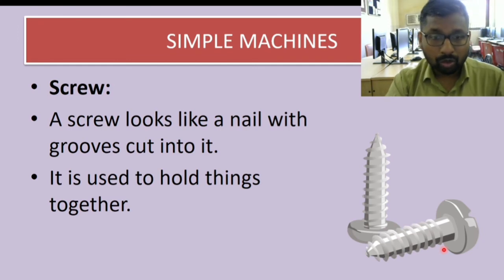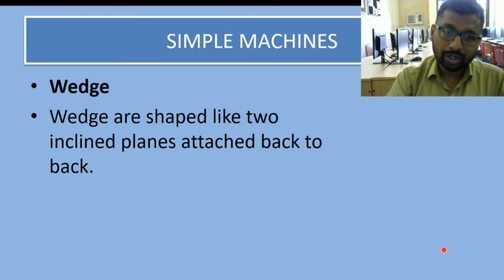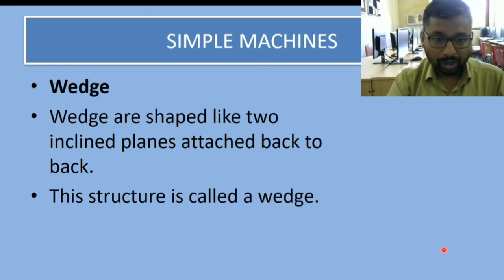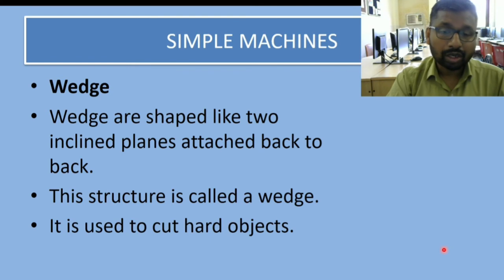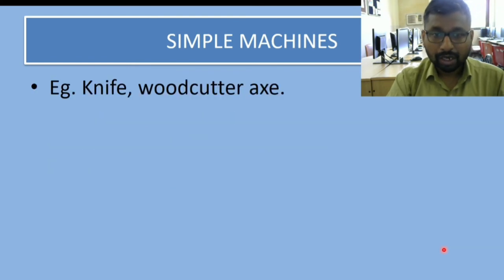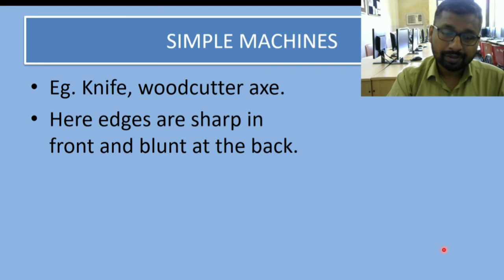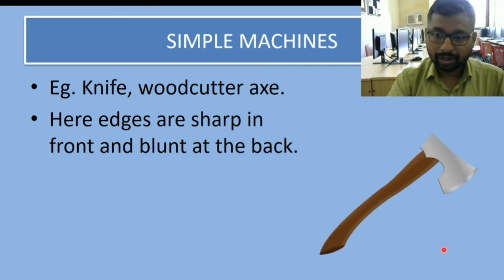Then comes a wedge. Wedges are shaped like two inclined planes attached back to back. This structure is called a wedge. It is used to cut hard objects like with a knife or wood cutter axe. The edges are sharp in front and blunt at the back. This is a wood cutter axe, and as you can see, there are two inclined planes that come together and can be used to cut hard objects.